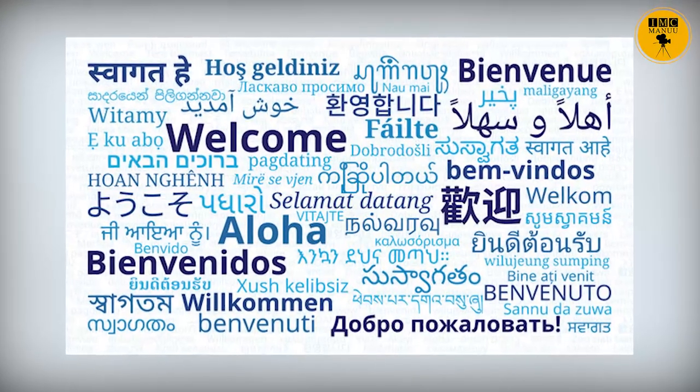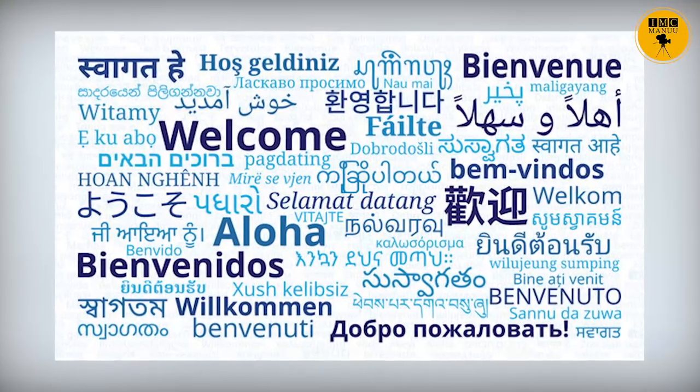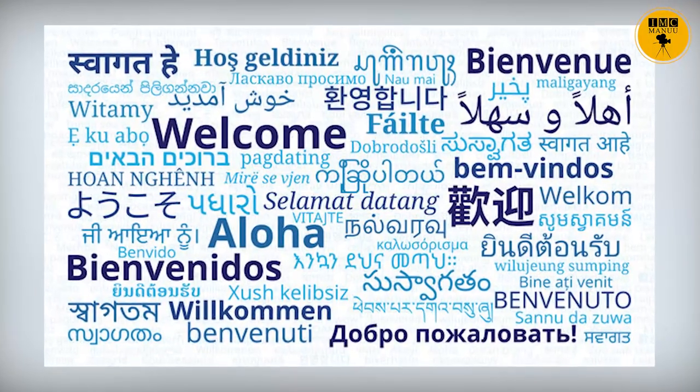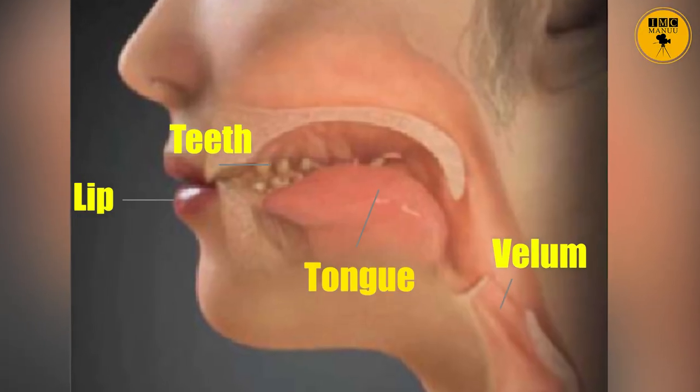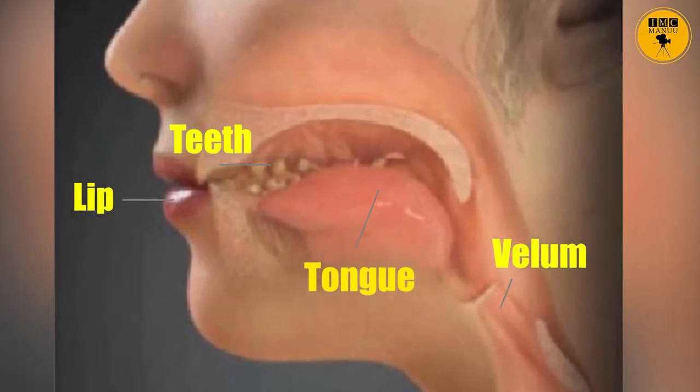To utter any sound in any language, we need some speech organs. It is our speech organs that help us in the articulation of sounds — whether in Urdu, English, Telugu, Marathi, or any language. The speech organs play a very important role in the articulation of sound. In the case of consonant sounds, we need a combination of lips, teeth, tongue, and velum.